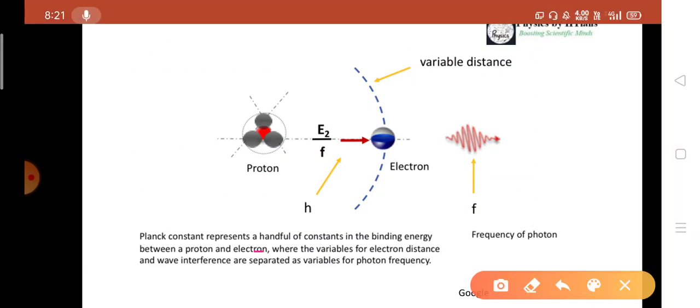Planck constant represents a handful of constants in the binding energy between a proton and electron, where the variables of the electron distance and wave interference are separated as a variable of photon frequency. Here, the frequency of photon is related to the Planck constant. The energy of the electron is related to Planck constant. Energy of the atoms is related to Planck constant.